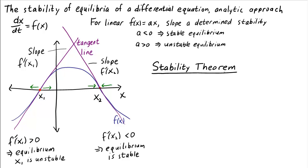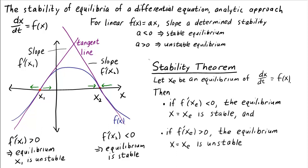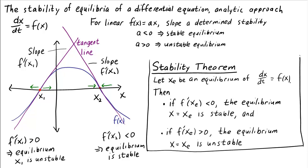We can summarize these results with a stability theorem. Let xe be an equilibrium of the autonomous differential equation dx/dt equals f of x. Then, if f prime of xe is less than zero, the equilibrium is stable. If f prime of xe is positive, the equilibrium is unstable. This works in general for any nonlinear function f, as long as the derivative is defined.